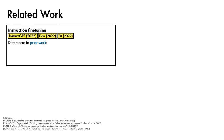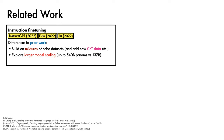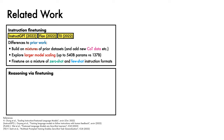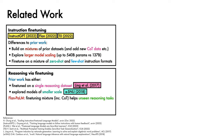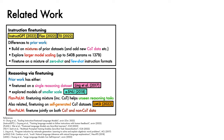Flan-PaLM relates to a number of prior works. First, there is work showing the benefits of instruction fine-tuning, such as InstructGPT, Flan, and T0. Some differences to these works include: first, Flan-PaLM builds on mixtures of datasets from prior work and adds new chain-of-thought data, as well as other formats like code and dialogue; second, Flan-PaLM explores larger model scaling, up to 540 billion parameters rather than 137 billion; and third, Flan-PaLM fine-tunes on a mixture of zero-shot and few-shot instruction formats. Next is related work on reasoning via fine-tuning, where prior work has either fine-tuned on a single reasoning dataset or explored models at smaller scale. By contrast, Flan-PaLM shows that use of a fine-tuning mixture including chain-of-thought data helps unseen reasoning tasks for both small and large models. Another related work explored fine-tuning on self-generated chain-of-thought datasets with a technique known as language model self-improvement, or LMSI. By contrast, Flan-PaLM fine-tunes jointly on both chain-of-thought and non-chain-of-thought data.